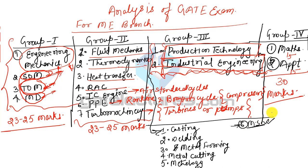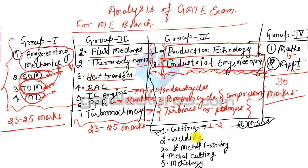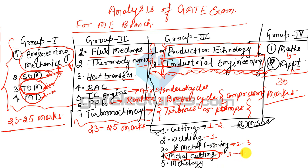Metrology is the fifth topic in Production Technology, but it is not very important — sometimes questions don't come from this topic at all. In Metal Cutting, the main topics are tool life, tool geometry, and analysis of metal cutting (Merchant Circle Diagram). Metal cutting contains 3 to 4 questions in every GATE exam, and metrology contains 1 to 2 questions.